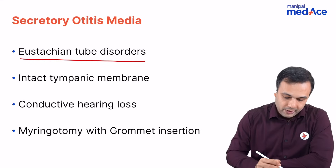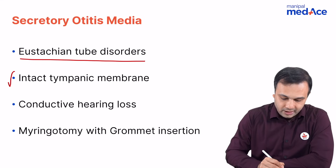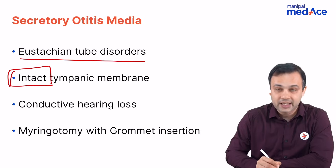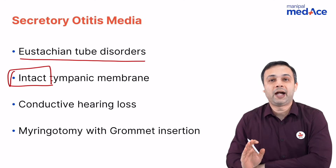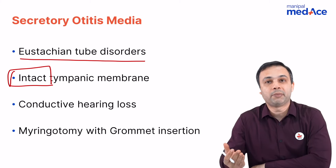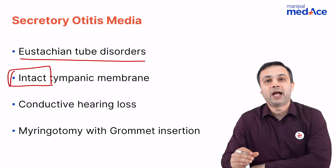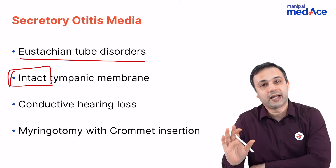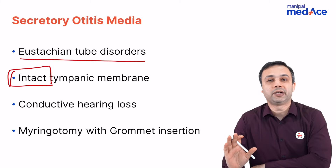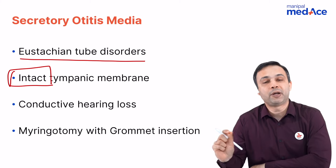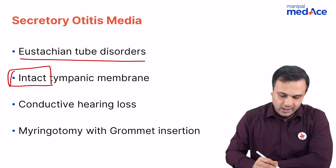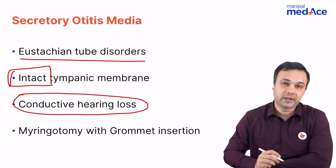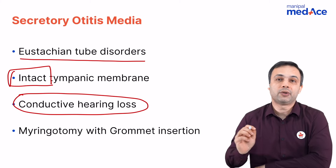When you talk about secretory otitis media, remember it has an intact tympanic membrane — there is no perforation. Beyond the intact tympanic membrane, you get an air-fluid level and a blue drum, which is diagnostic. On tympanometry, you get a characteristic Type B curve, and it produces a conductive hearing loss on pure tone audiometry.